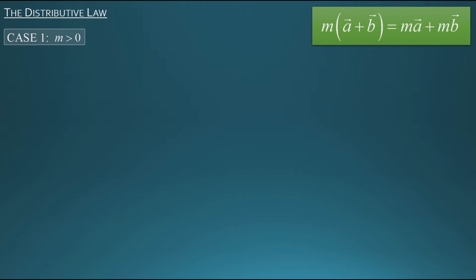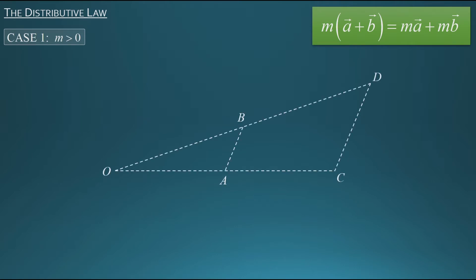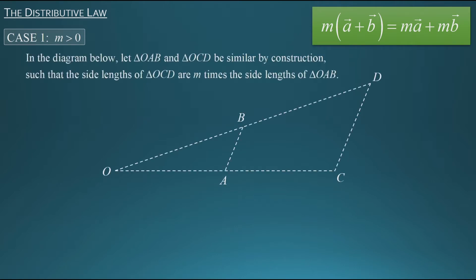To show why the distributive law works with vectors in this case we're going to use a diagram set up like this. Based on the way we've constructed our diagram, we have two triangles — triangle OAB and OCD — and we've made them to be similar triangles, so they have the same angles and their side lengths are in proportion. We're setting it up such that triangle OCD has side lengths that are m times the side lengths of triangle OAB. We'll define vector OA as vector A and vector AB as vector B.